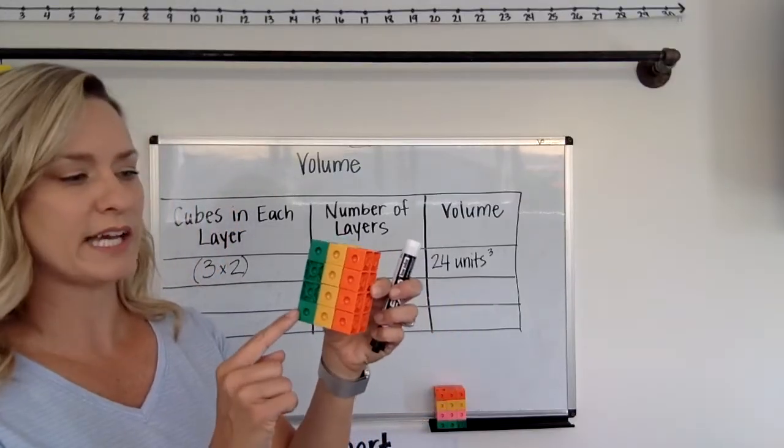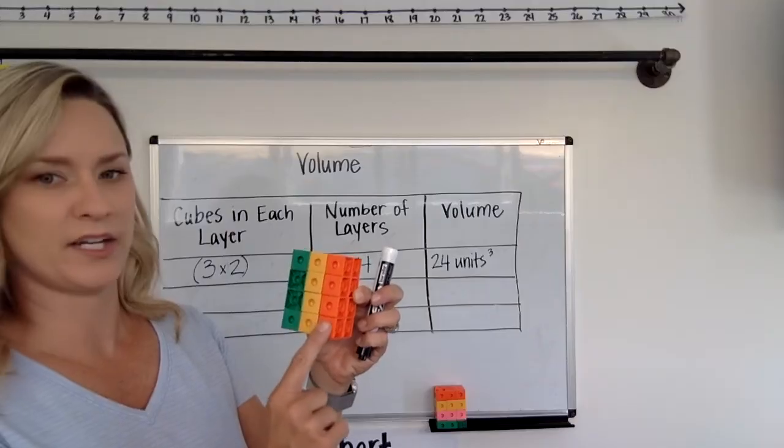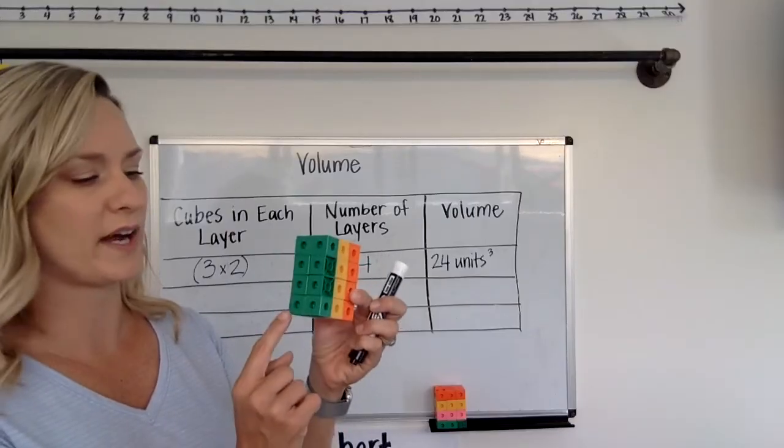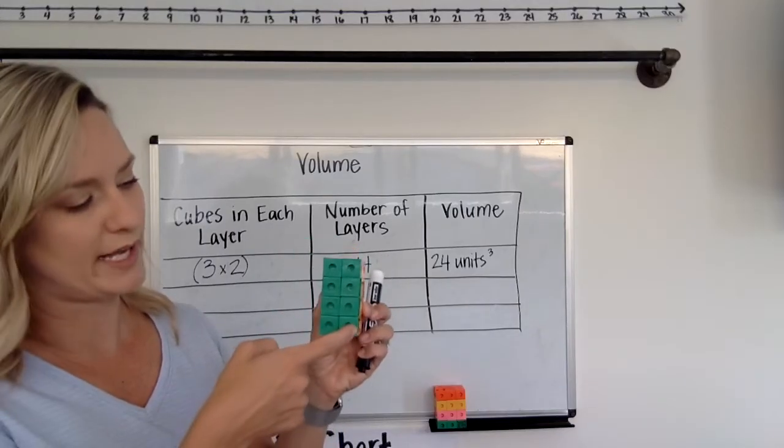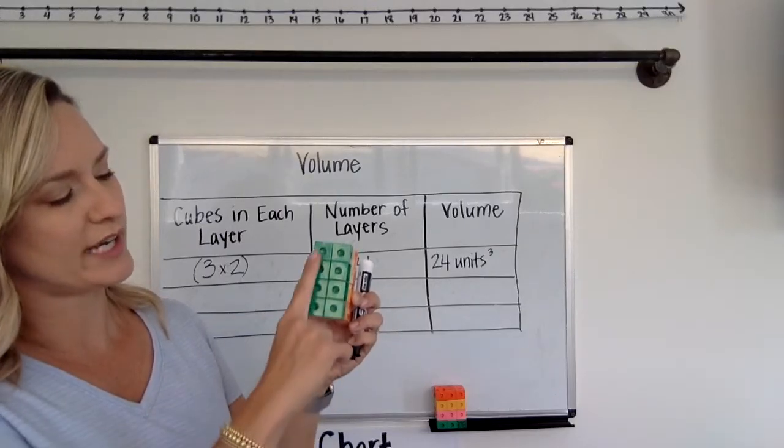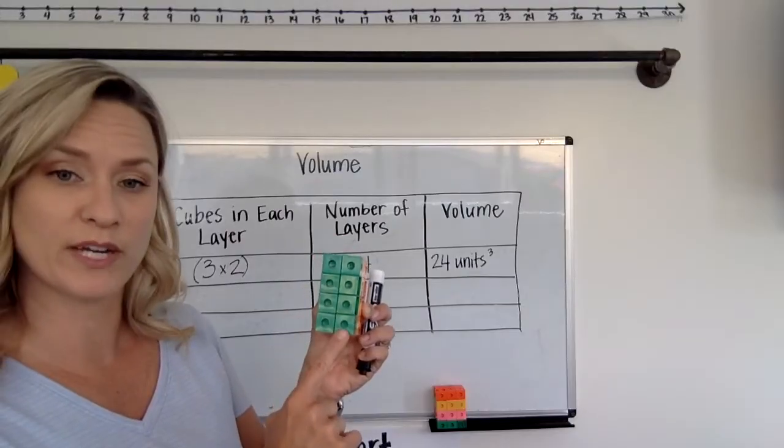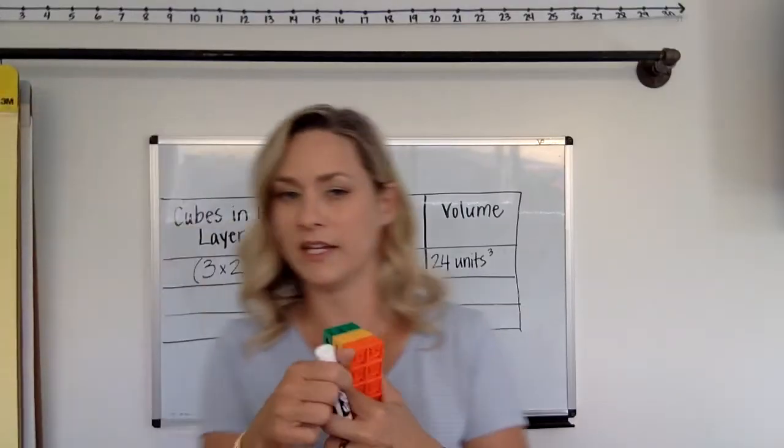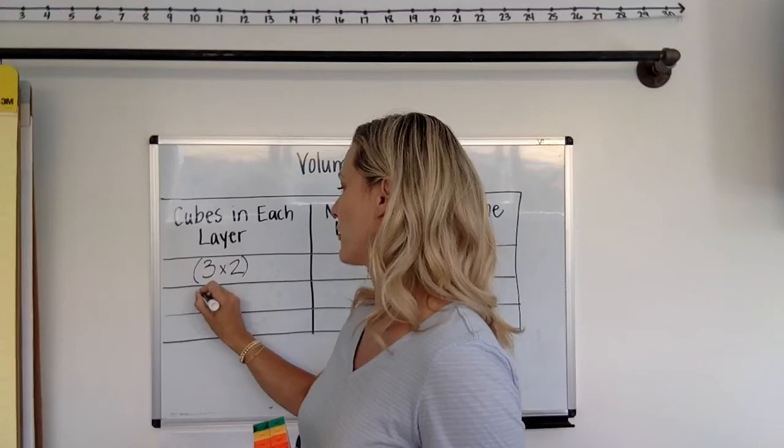We're gonna check out this one. We have a green layer, a yellow layer, and an orange layer. So in each layer, we've got a 2 by 1, 2, 3, 4. So each layer is a 2 by 4, and 2 times 4 is 8. We're gonna write 2 by 4 here.